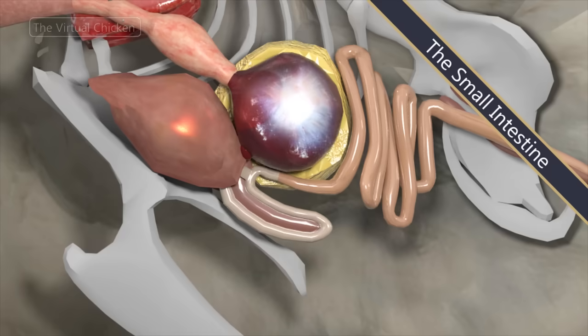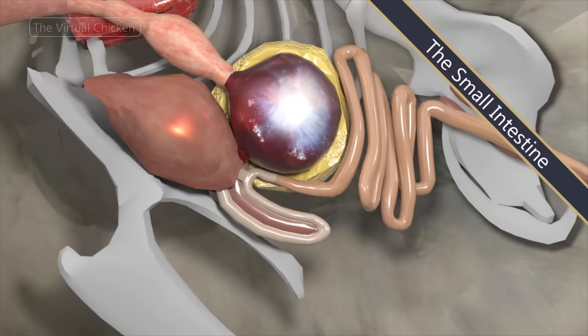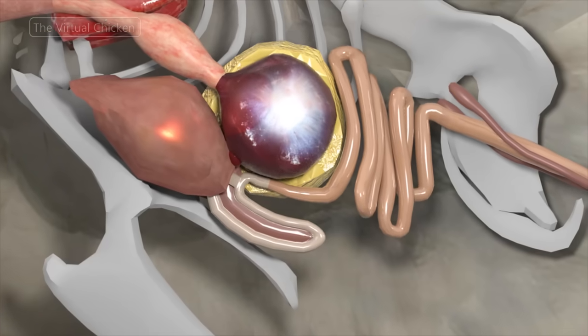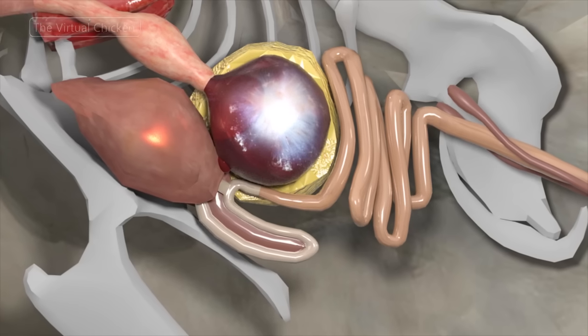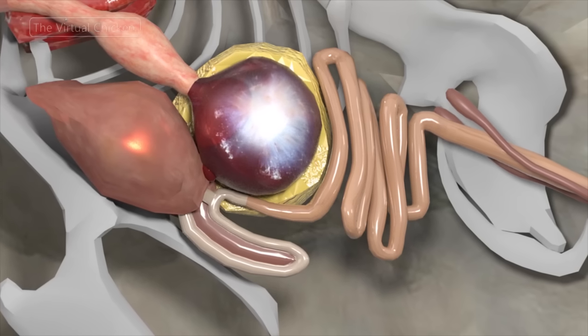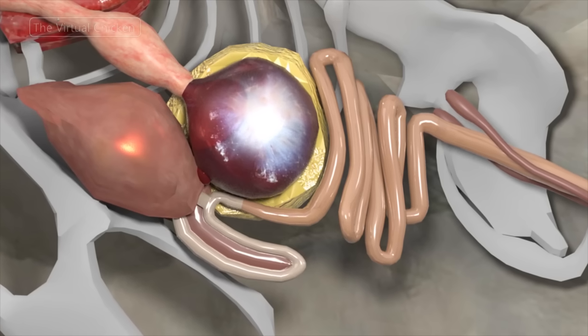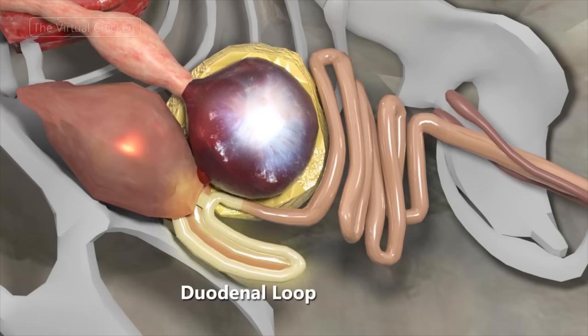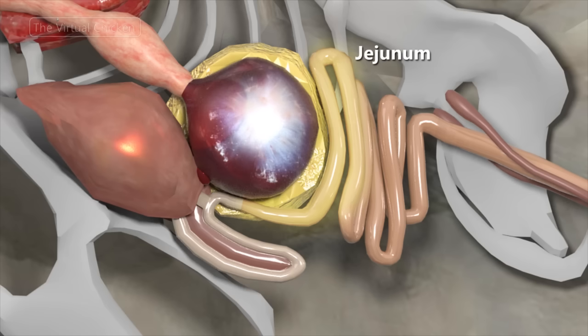Feed passes from the gizzard into the small intestine where digestion and absorption occur. The small intestine of a mature chicken is more than four and a half feet in length and has three distinct areas: the duodenum or the duodenal loop where the pancreas lies in the center, the jejunum, and the ileum. Collectively, the jejunum and ileum are called the lower small intestine.